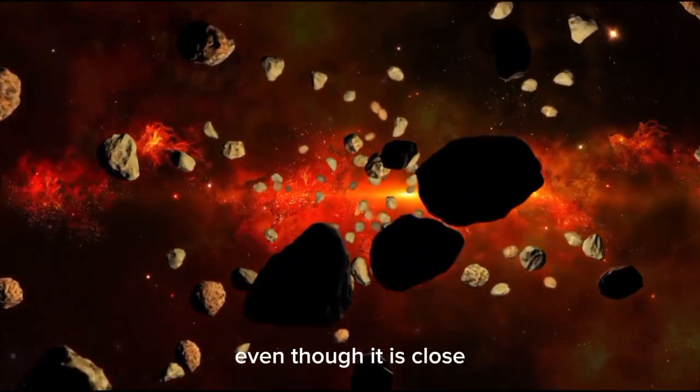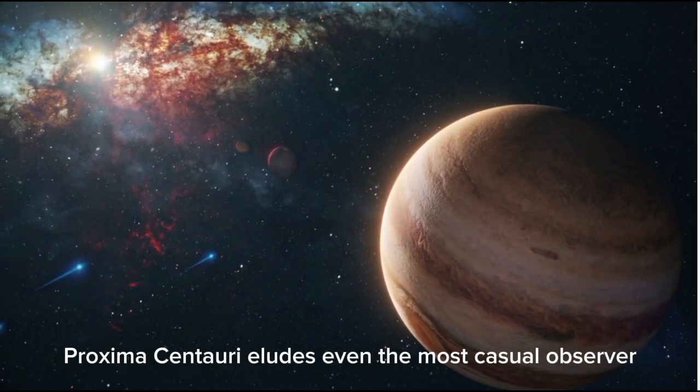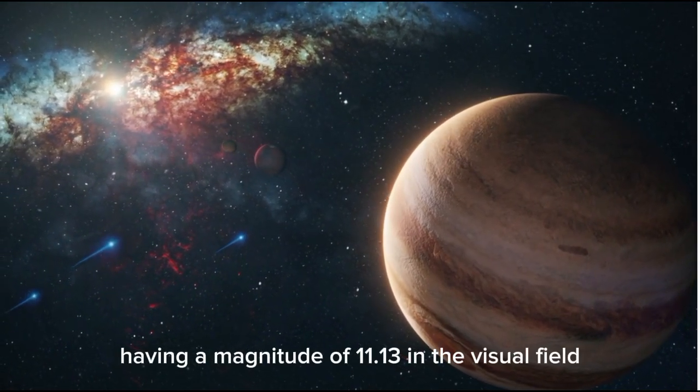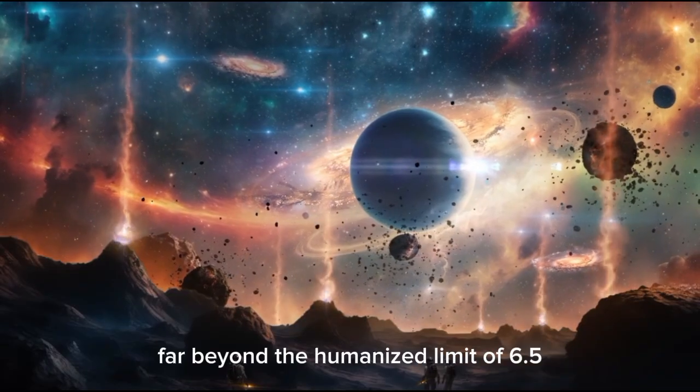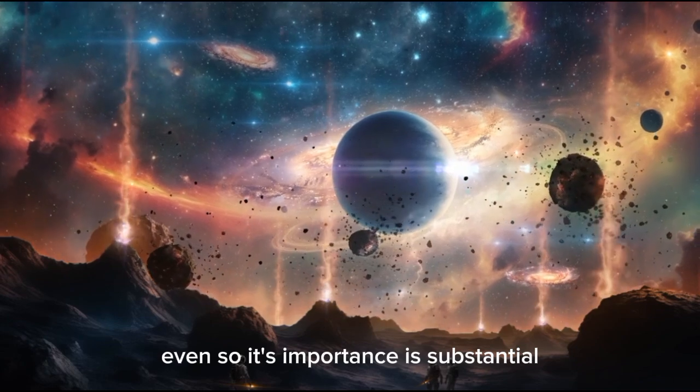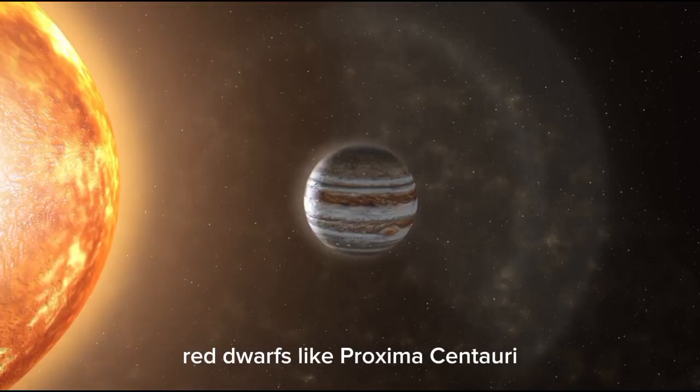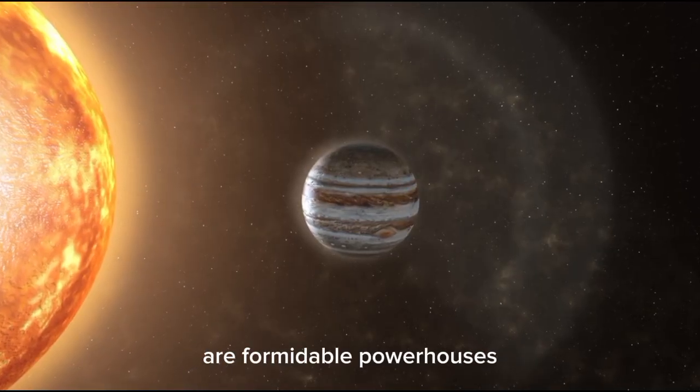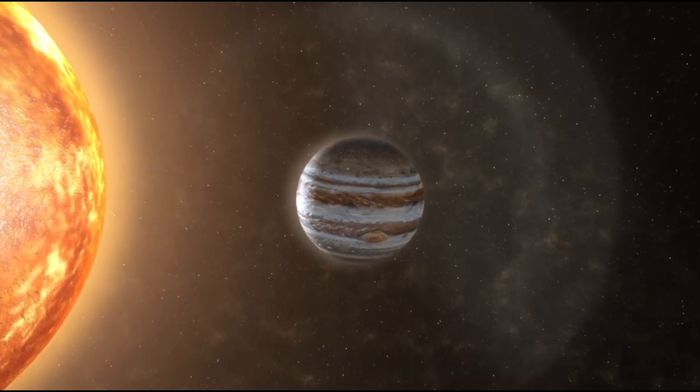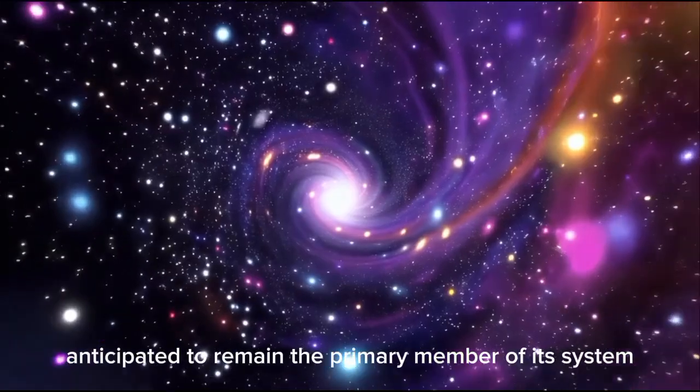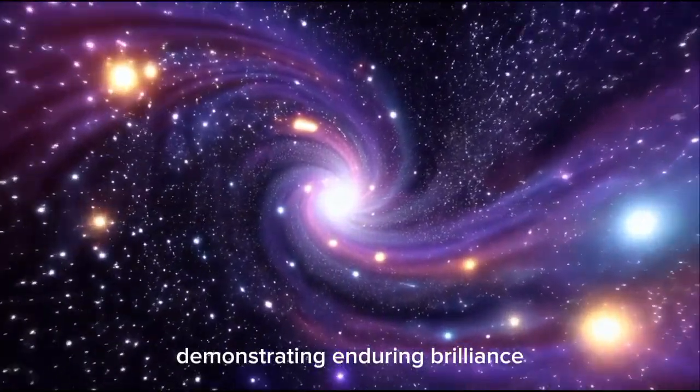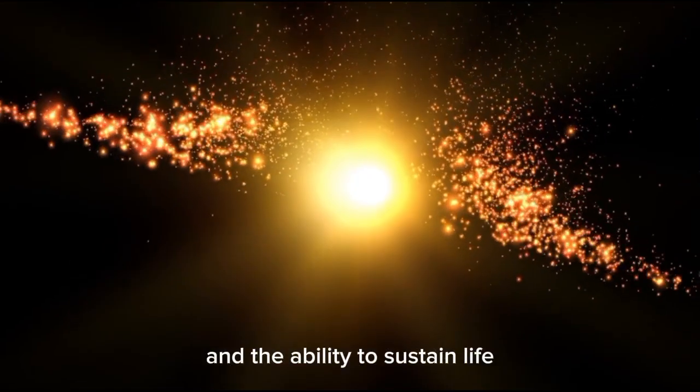It lies just 0.21 light-years from its brighter companions, several times greater than the distance from the Sun to Earth. Proxima Centauri, which means closest star, emphasizes its position as our closest stellar ally. In 1915, astronomer Robert Thorburn Innes introduced humanity to this magnificent gem. Even though it is close, Proxima Centauri eludes even the most casual observer, having a magnitude of 11.13 in the visual field, far beyond the human eye's limit of 6.5.